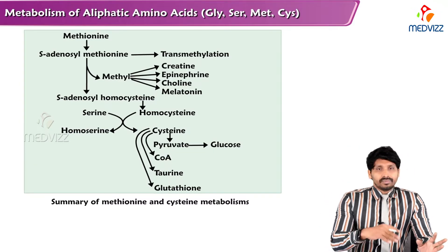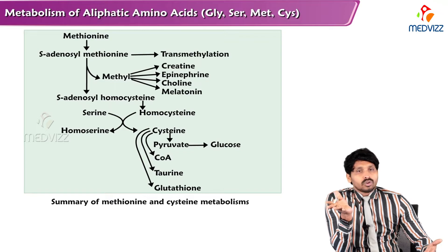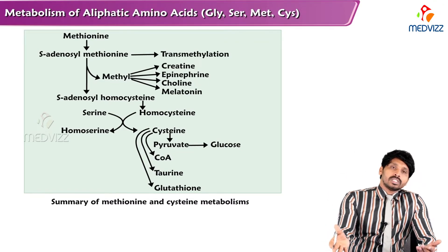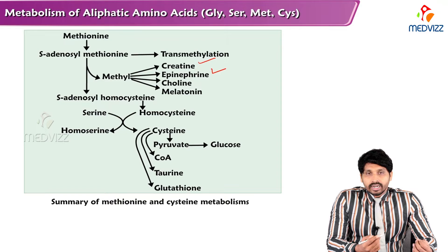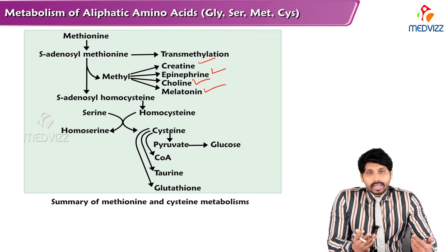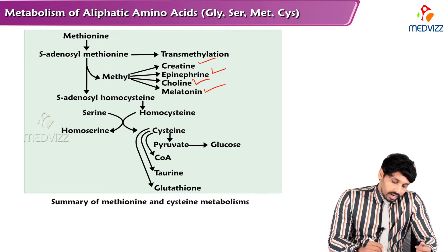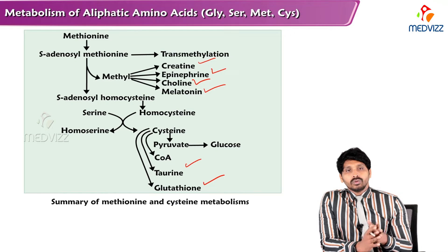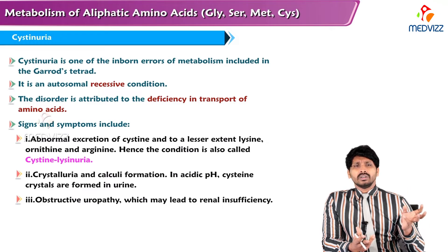In summary, both methionine and cysteine metabolism are linked because methionine forms cysteine, and cysteine forms other substances. Products from methionine include creatine, neurotransmitters like adrenaline and noradrenaline, choline for phospholipid formation, and melatonin — the pineal gland hormone involved in circadian rhythm. From cysteine: glucogenic intermediates, taurine, and glutathione.